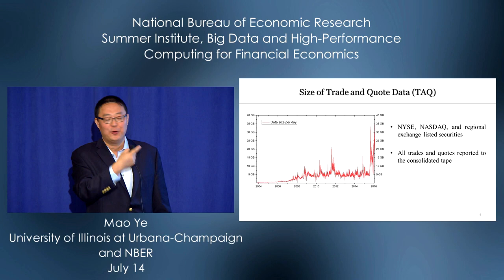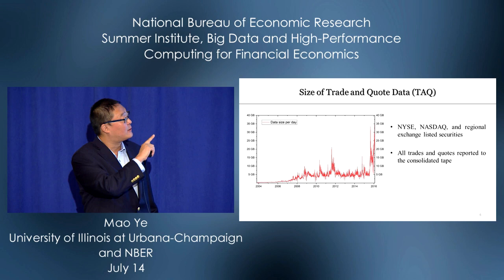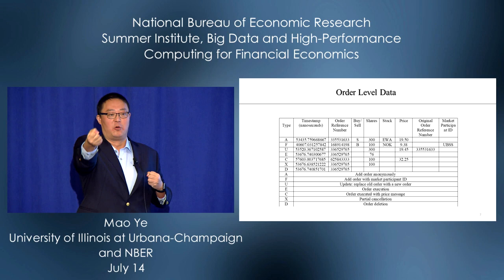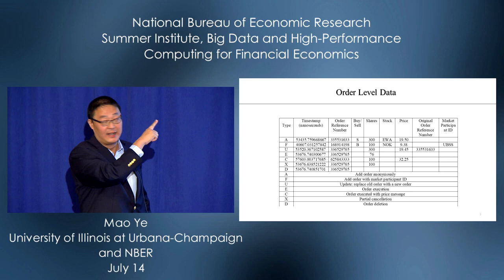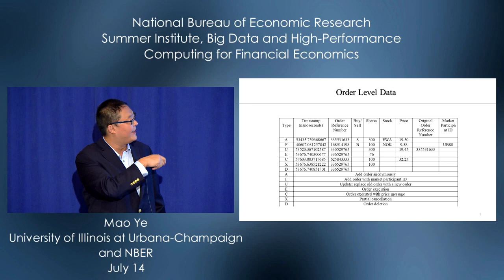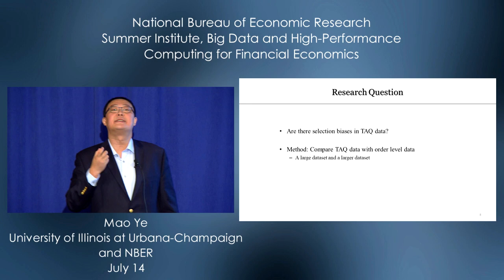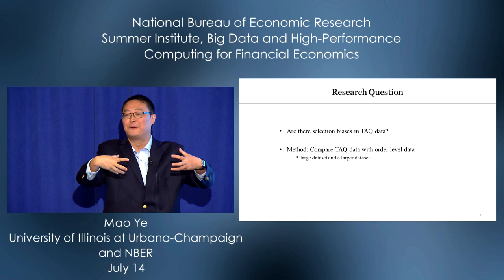The TAQ data includes all trades and quotes reported to the consolidated tape — it's 25 gigabytes per day. Why is this considered small? Because there's an even larger dataset. When you submit orders, sometimes you cancel them; some orders remain unexecuted. This order-level data from NASDAQ tells you when people add or cancel orders, but it's not in the trade-level TAQ data.